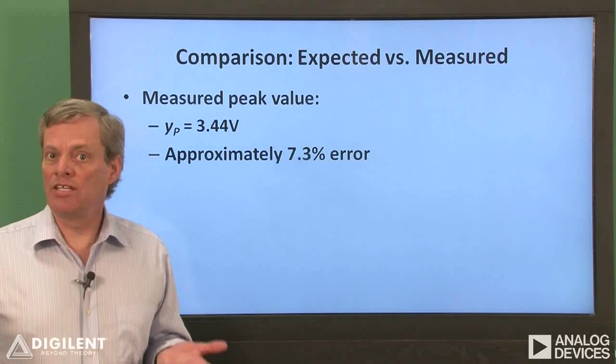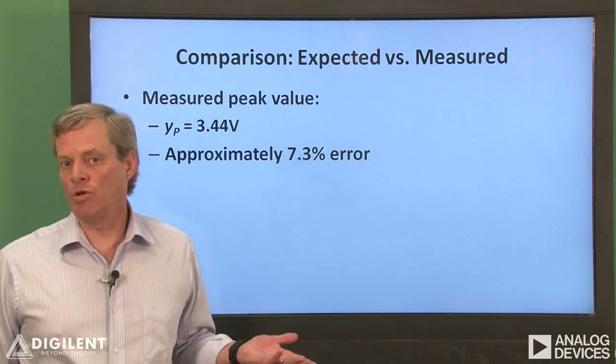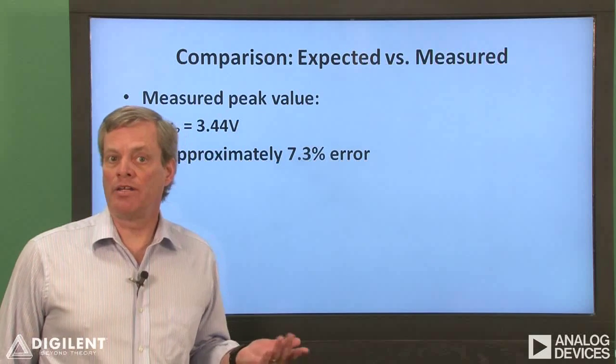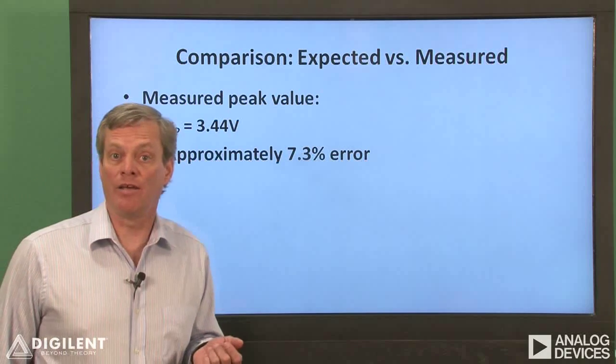DC values tend to be much easier to predict than time varying values, since they depend on fewer quantities. I'm generally pretty happy if I can predict a dynamic quantity, such as overshoot or rise time, to within about 10 or even 15 percent of my measured value.